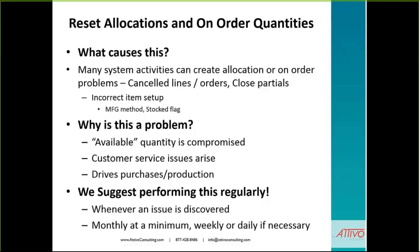It's a problem because when we're looking for available quantity, we can't tell if we have the available-to-promise correct. The customer service issue arises because we can't tell our customers whether we have the product available, whether it's going to be back-ordered. Also, the allocations drive purchases and production — if I have an allocation and a requirement, I want to make sure I can satisfy that requirement whether I need to purchase or produce the item. We suggest this is performed on a regular basis — minimum monthly, but normally weekly. Some organizations process reset allocations and on-order quantities on a daily basis.